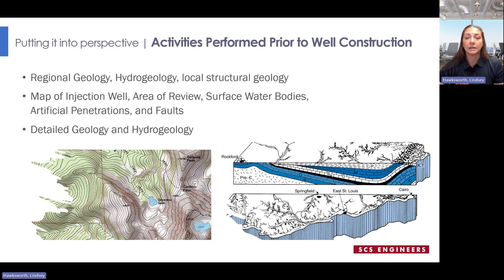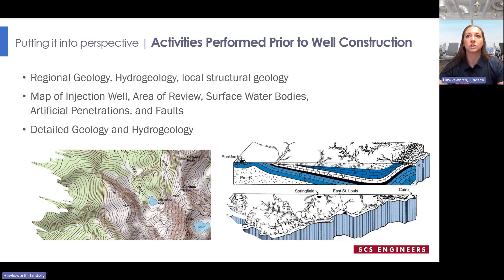Taking those requirements and putting them into perspective on how they protect groundwater: the regional geology, hydrogeology, and structural geology require information such as topographical maps, cross-sections describing lithologies, depths, groundwater flow patterns, and regional faults that may transcend confining zones. This paints a picture of the geologic history of the project area, looking at subsurface formations on a regional scale while also including the targeted injection zone and confining zones. This information helps determine both suitable and unsuitable sites.